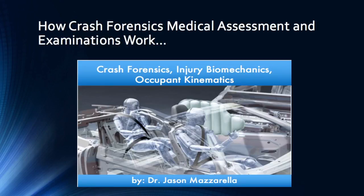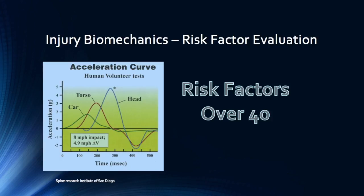How does this crash forensics medical assessment and examination work? They say a picture is worth a thousand words, so is a video worth two thousand words? Hopefully after reviewing a full-scale human volunteer crash test, your perspective on motor vehicle accident collisions will be changed. Now we will show you this live full-scale human volunteer crash test and how known forensics can determine injury potential. In every collision, we consider over 40 risk factors, which allows for a completely unbiased injury analysis and determination which can help the occupant, if injured, recover in a more timely manner. This is how just one risk factor can help determine injury potential.